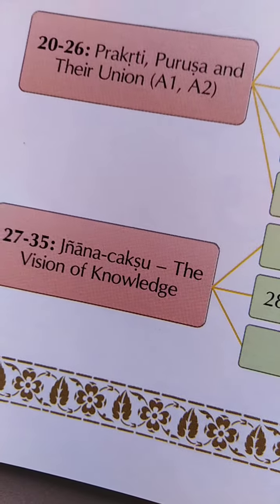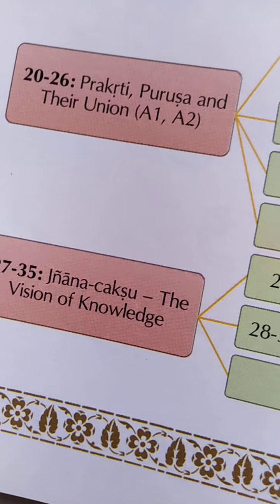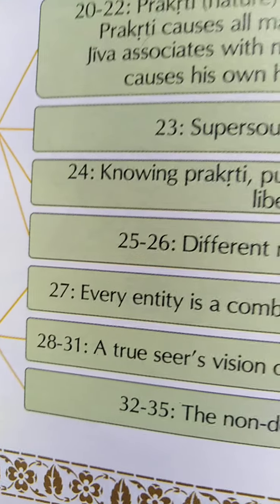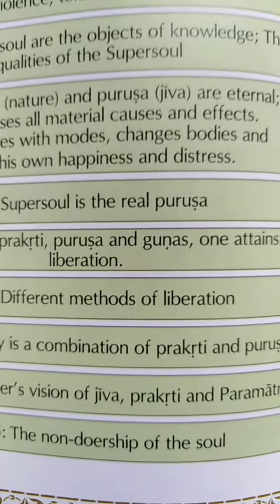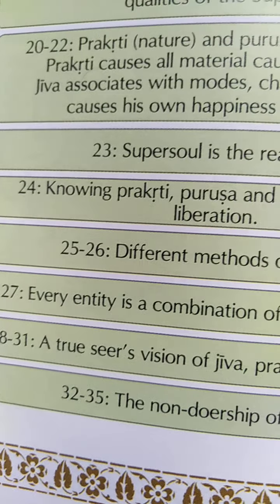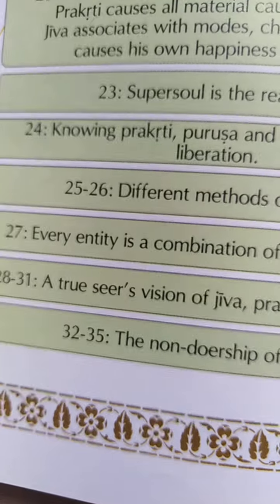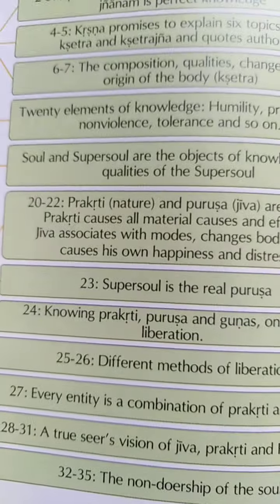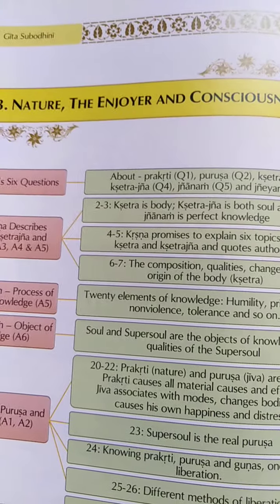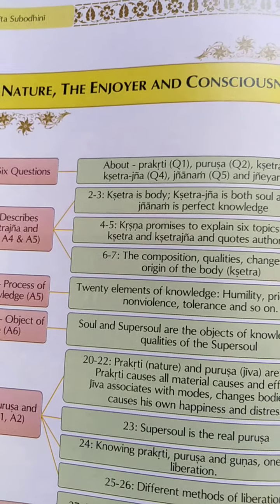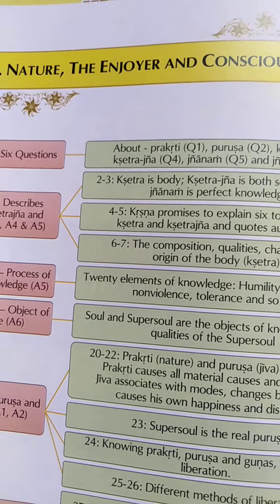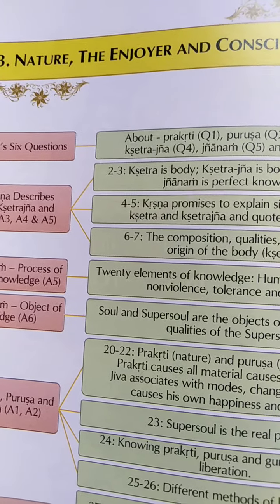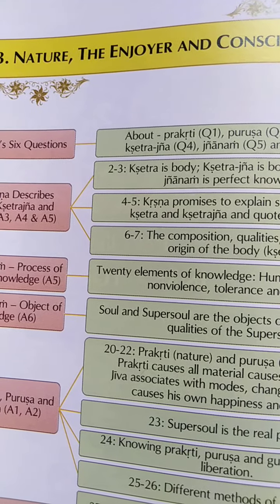The last section — the twenty-seventh to thirty-fifth shloka — is about Jnana Chakshu, the Vision of Knowledge. Krishna gives the particular vision of knowledge. In the twenty-seventh shloka, Krishna says every entity is a combination of Prakriti and Purusha — a true seer's vision of Jiva, Prakriti and Paramatma. In the thirty-second to thirty-fifth shloka, Krishna concludes that the soul is a non-doer and Prakriti is the controller and doer of everything. This chapter explains the Jnana aspects of Bhakti — how Bhakti can be done through Jnana, knowledge.